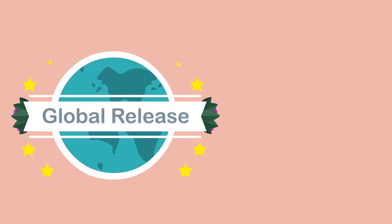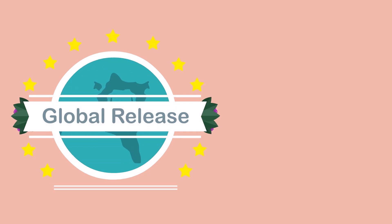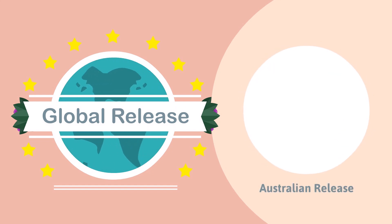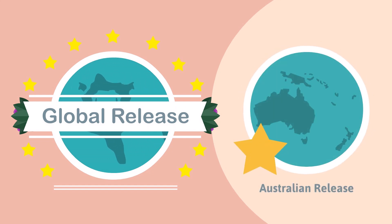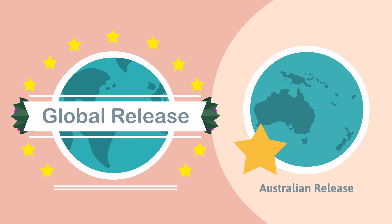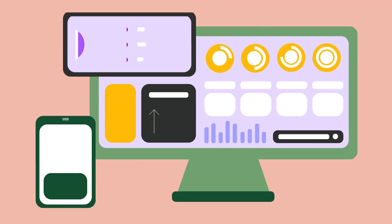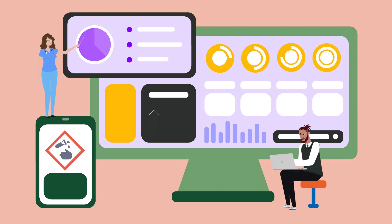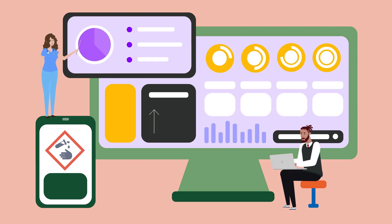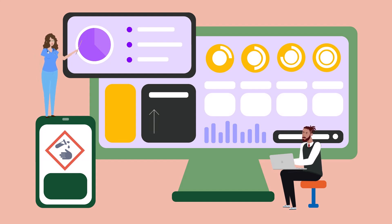In addition, we offer two versions of the course to cater to your specific needs: a global release and an Australian release. The Australian release provides additional information on work health and safety laws specific to Australia, ensuring you gain a solid understanding of local regulations. Experience the convenience of our user-friendly online platform, allowing you to access course materials anytime, anywhere. Dive into interactive modules, extensive resources, and engaging quizzes that assess your knowledge.